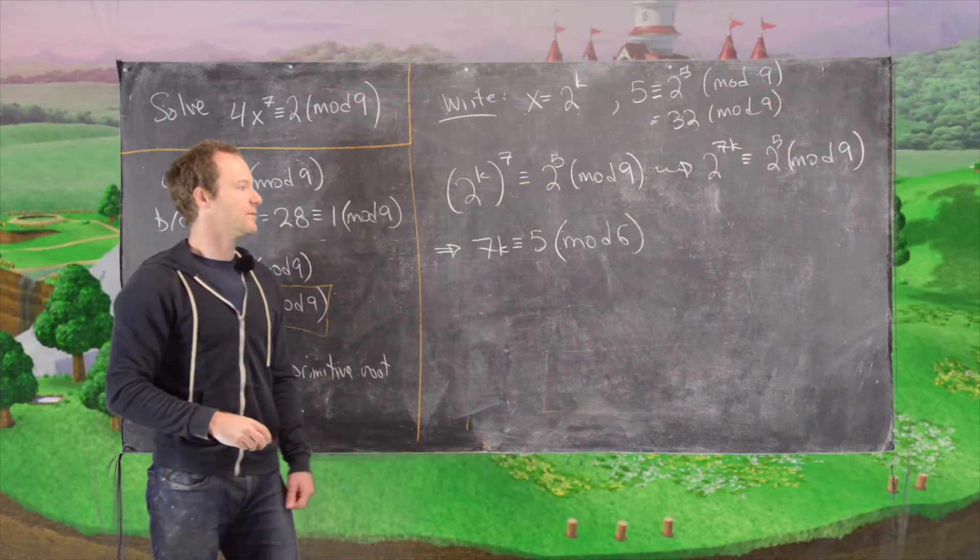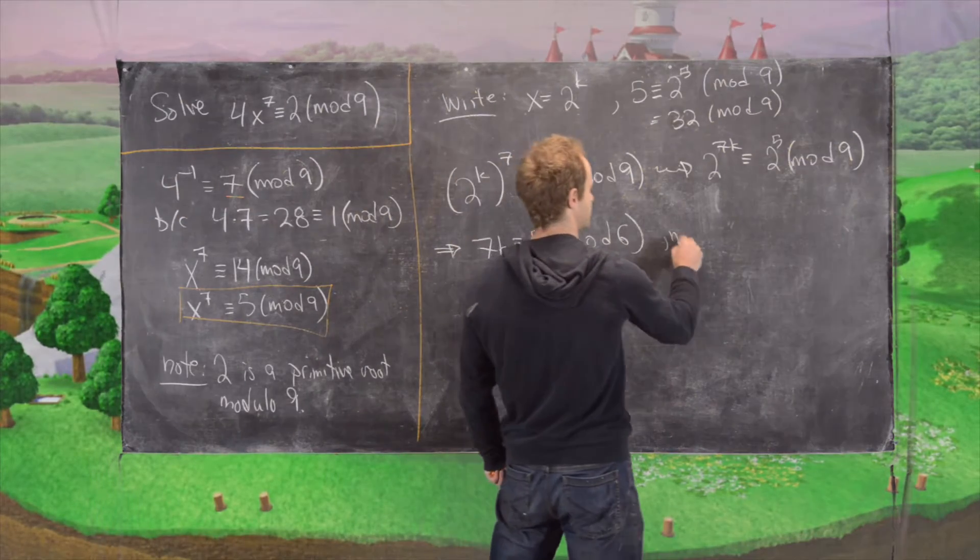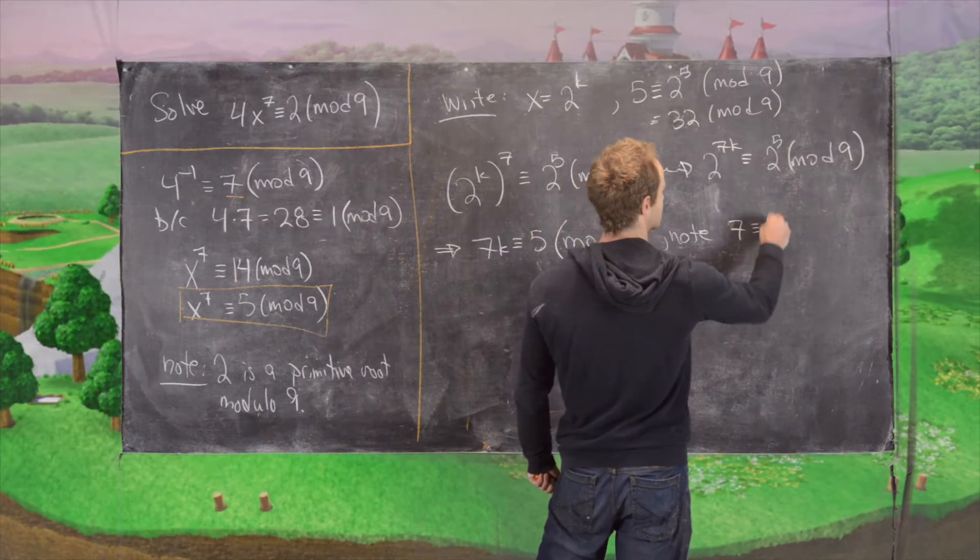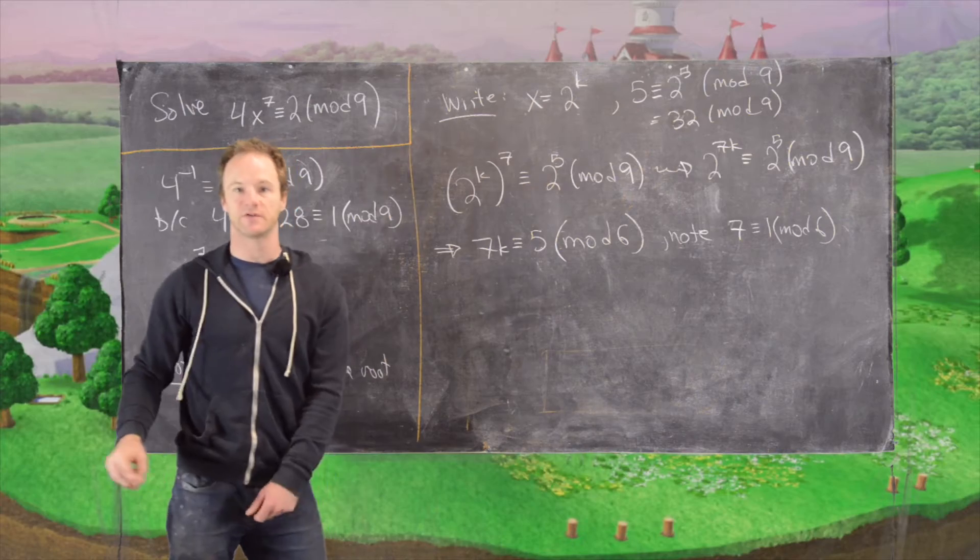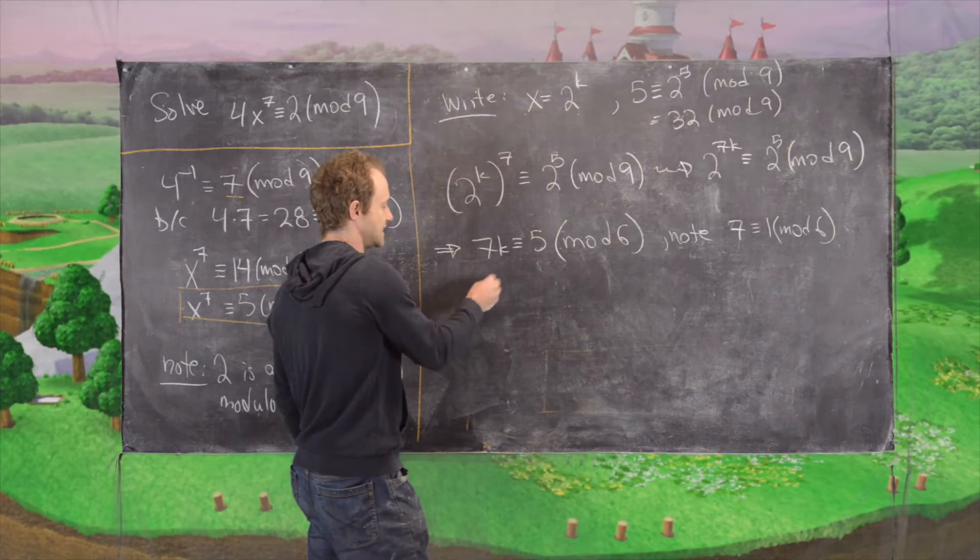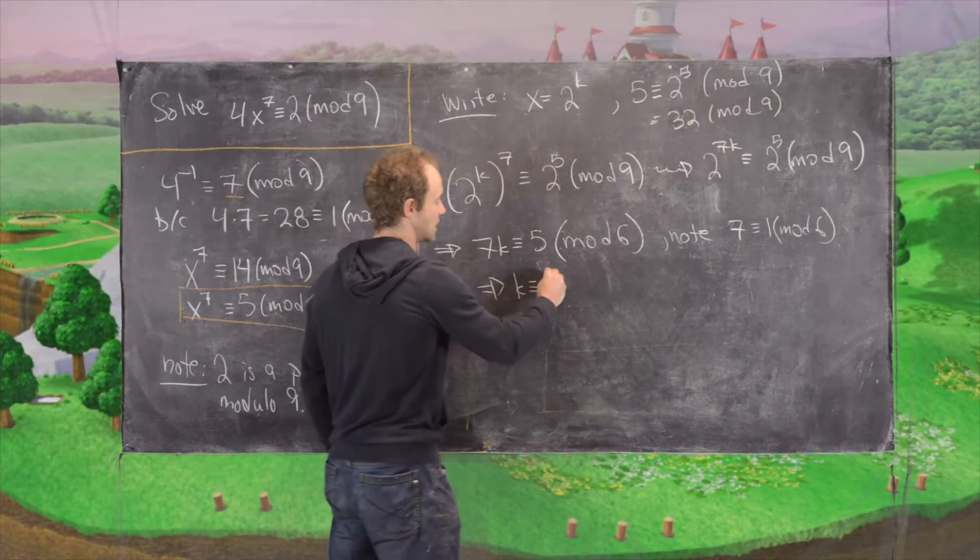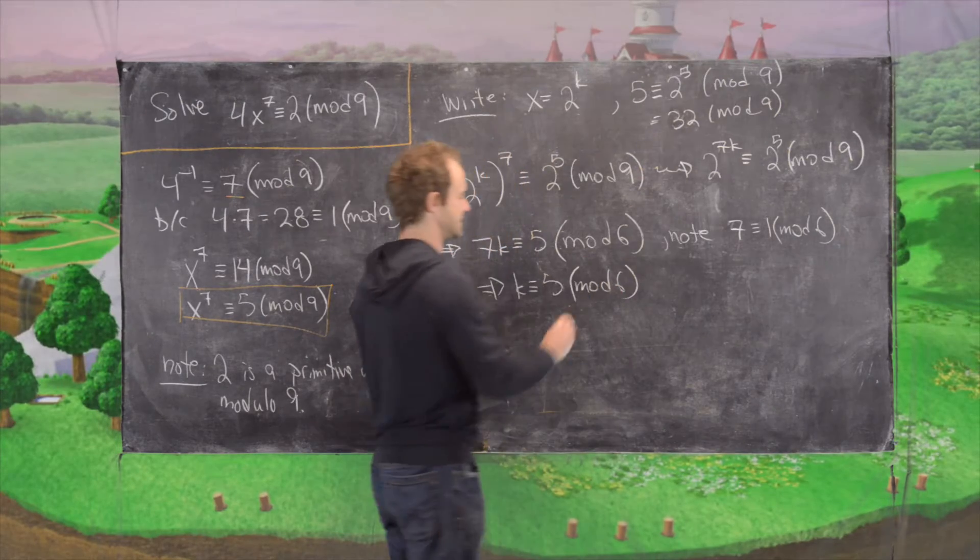But now let's notice that 7 is congruent to 1 mod 6. So that gives us quite a bit of simplification already. So that tells us that k is congruent to 5 mod 6.